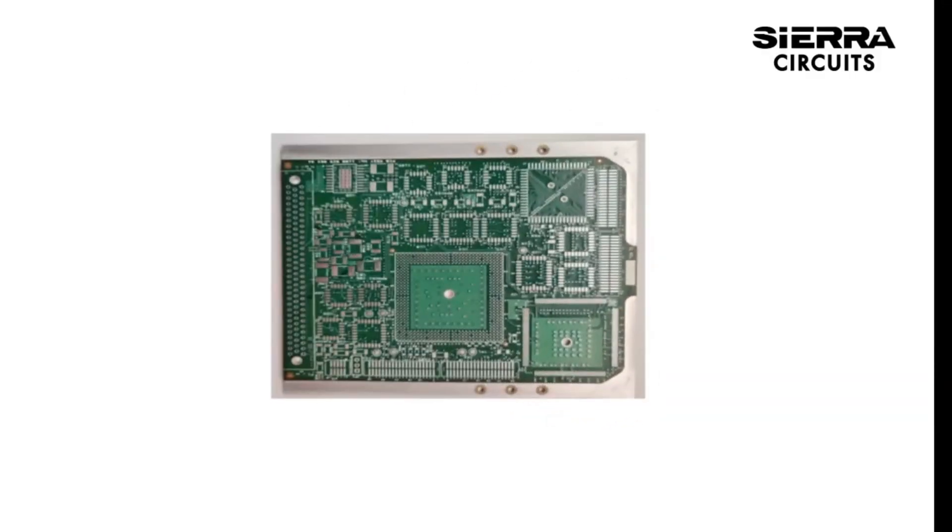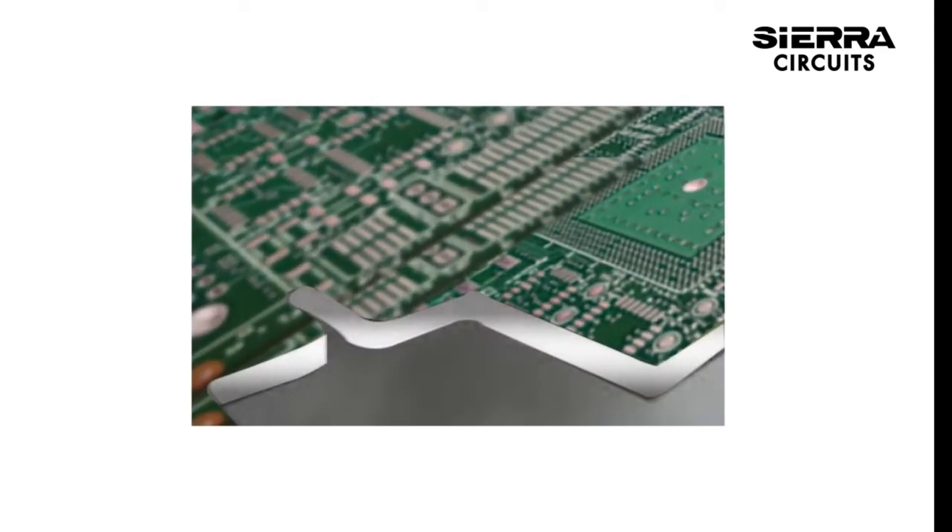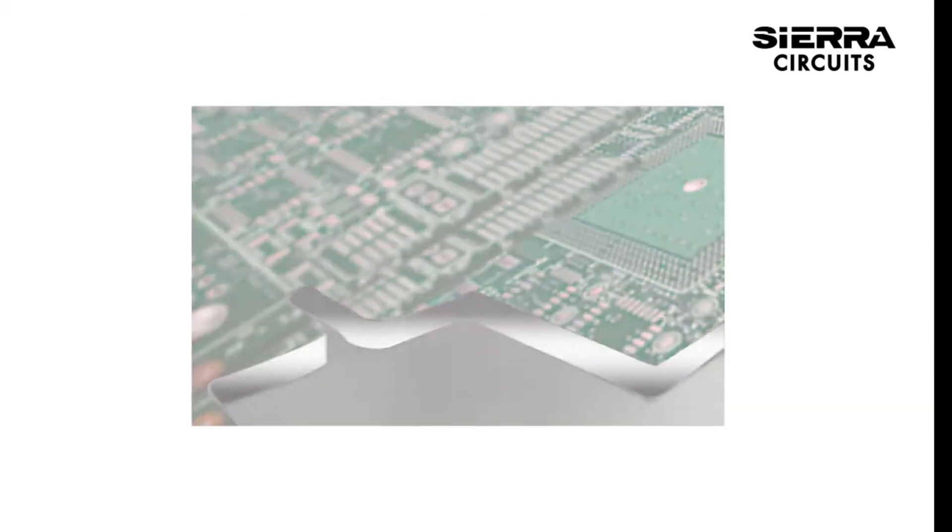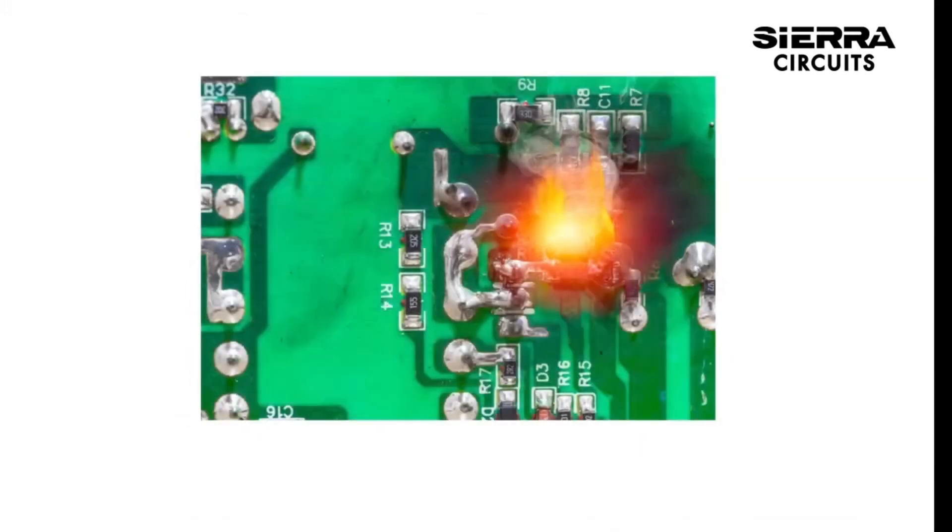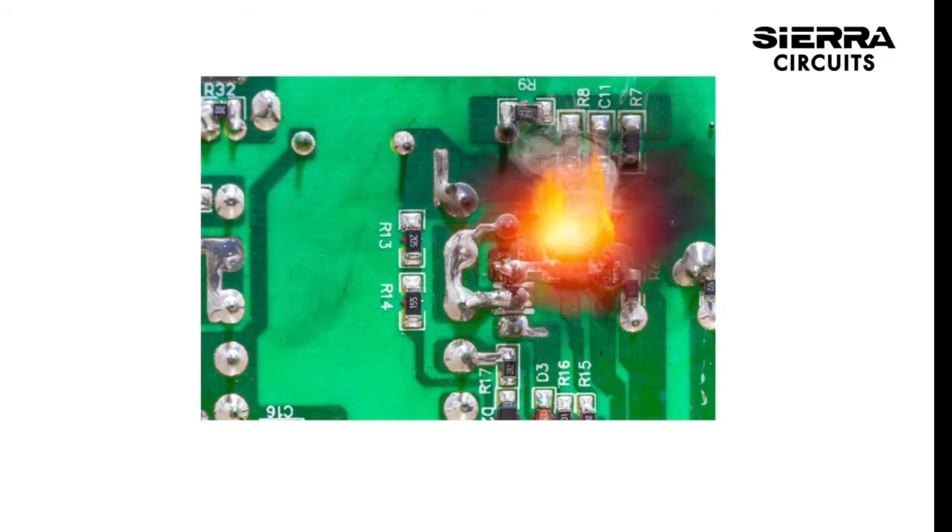A metal core printed circuit board MCPCB, also known as thermal PCB, incorporates a metal material as its base as opposed to the traditional FR4 for heat dissipation. The purpose of the metal is to draw in and dissipate heat away from critical board components and towards less critical areas such as the metal sink backing or metallic core.